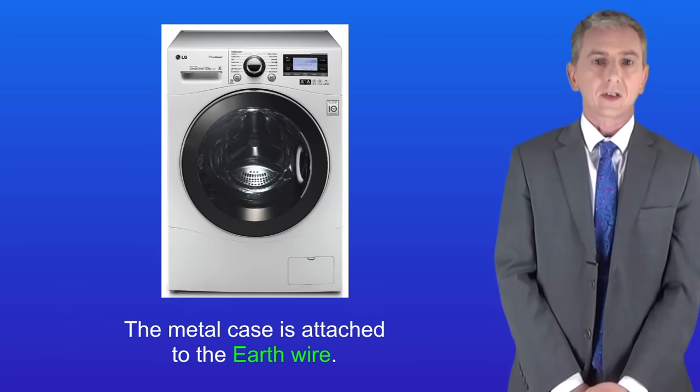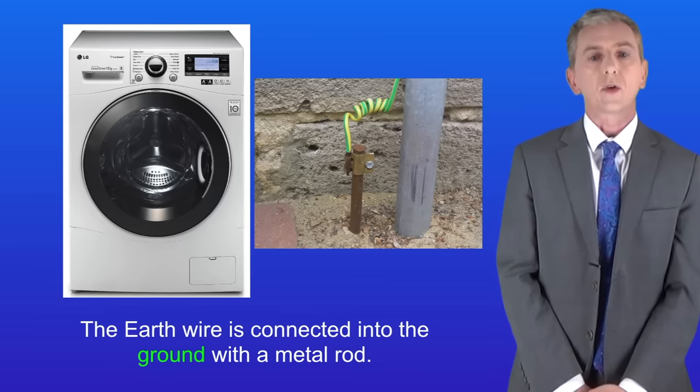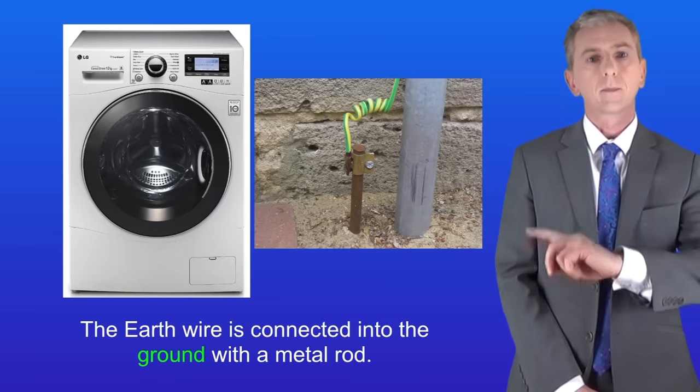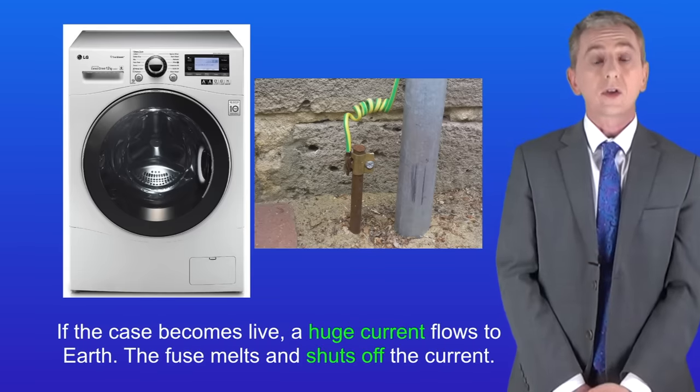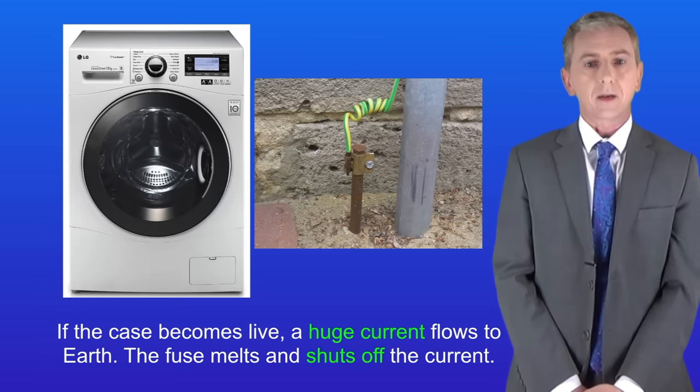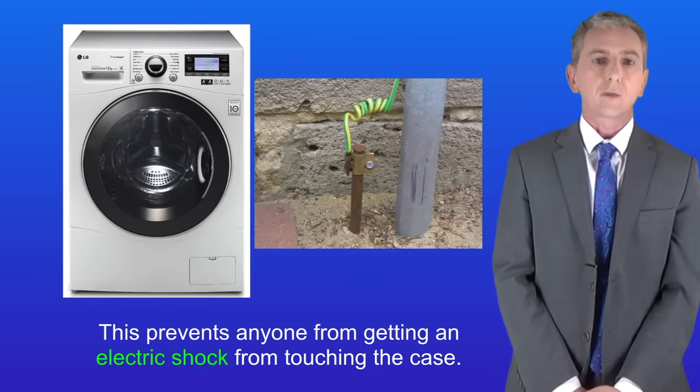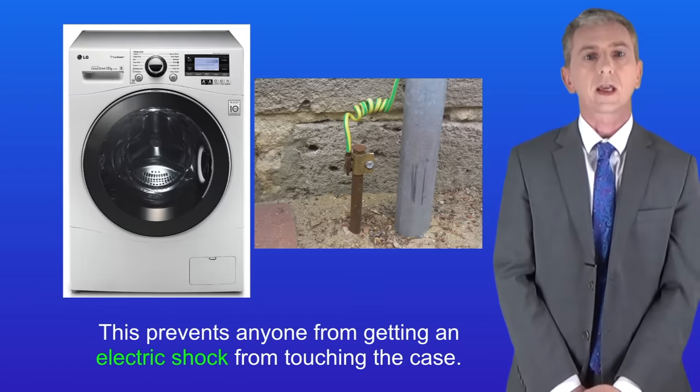The metal case is attached to the earth wire and the earth wire is connected into the ground with a metal rod like this. So if the case does become live a huge current now flows to the earth. The fuse melts and shuts off the current. This prevents anyone from getting an electric shock from touching the case.